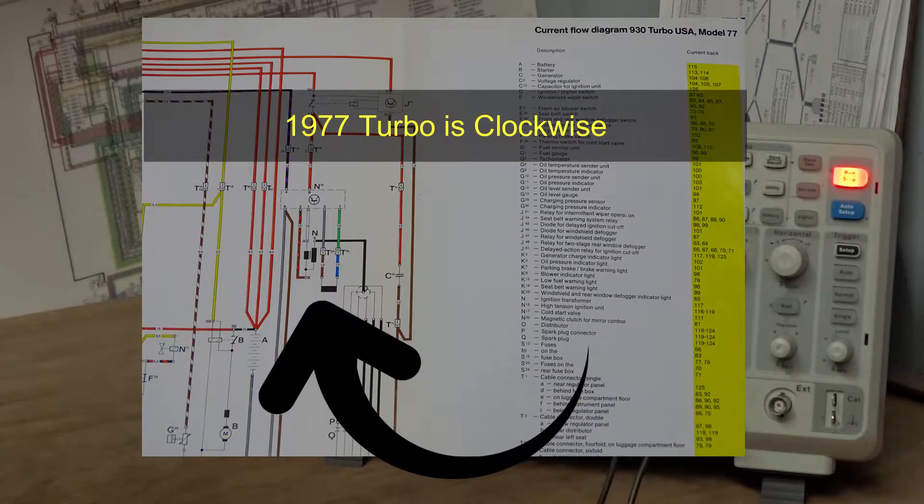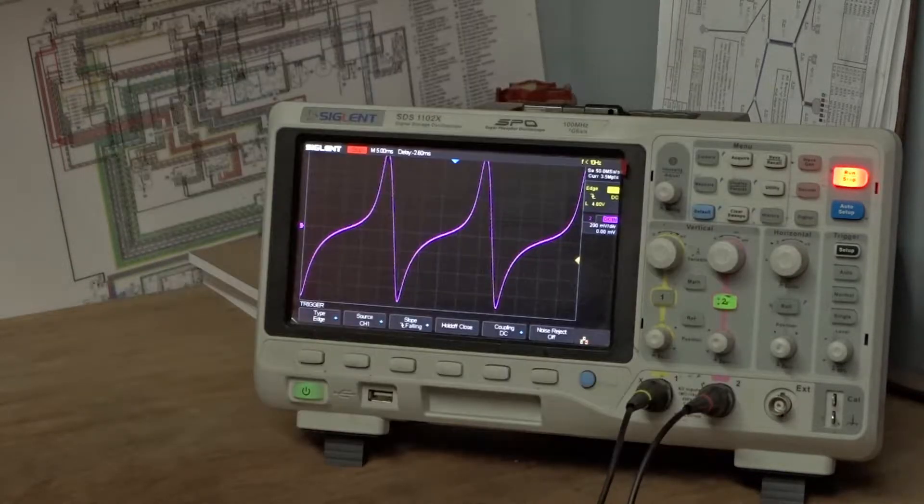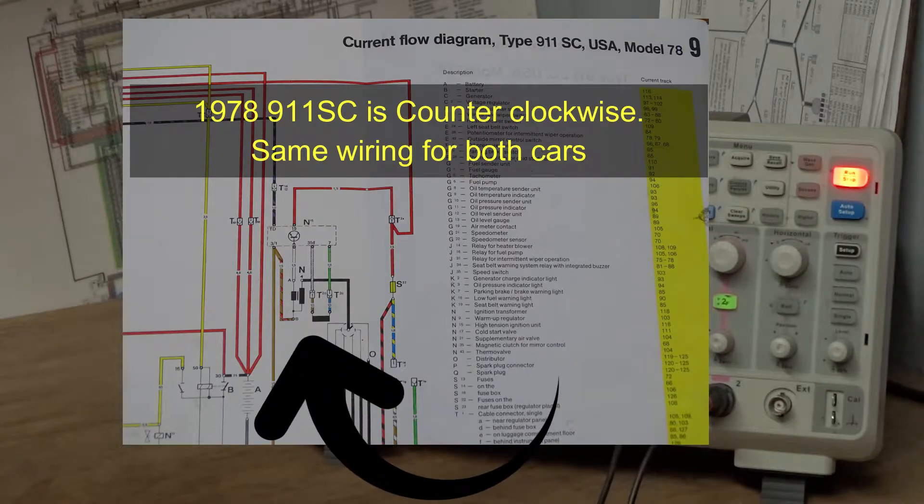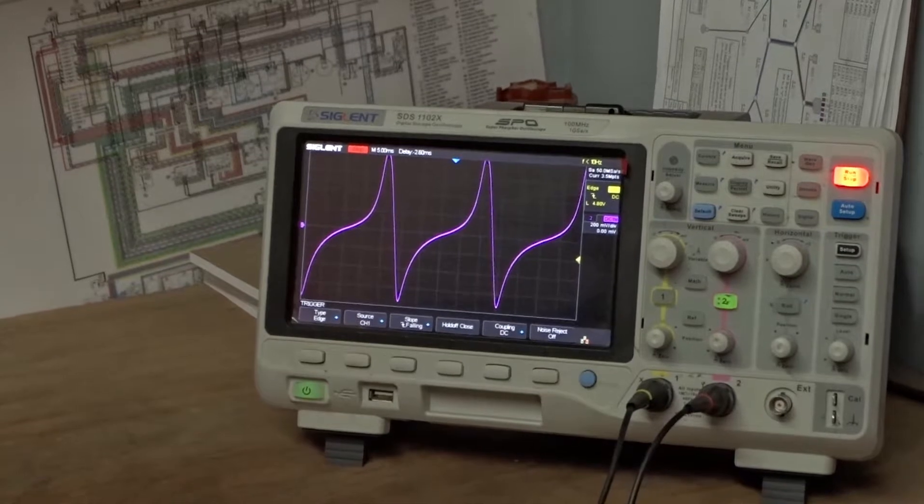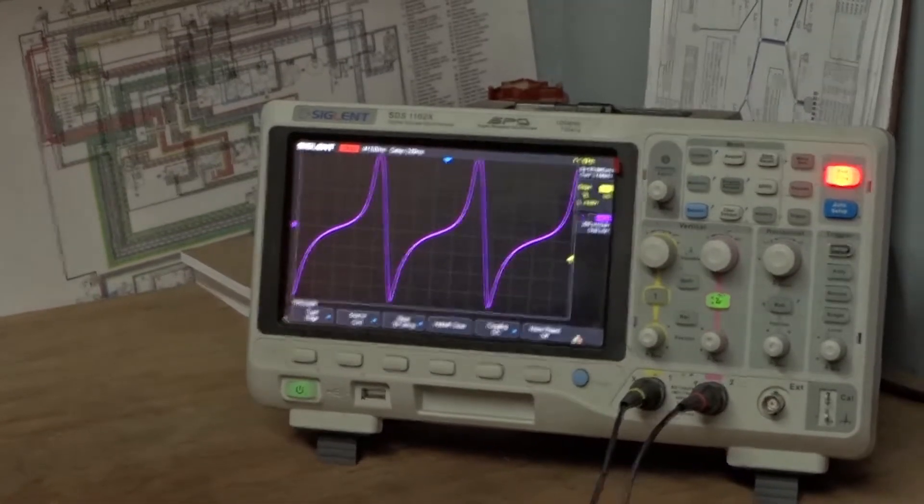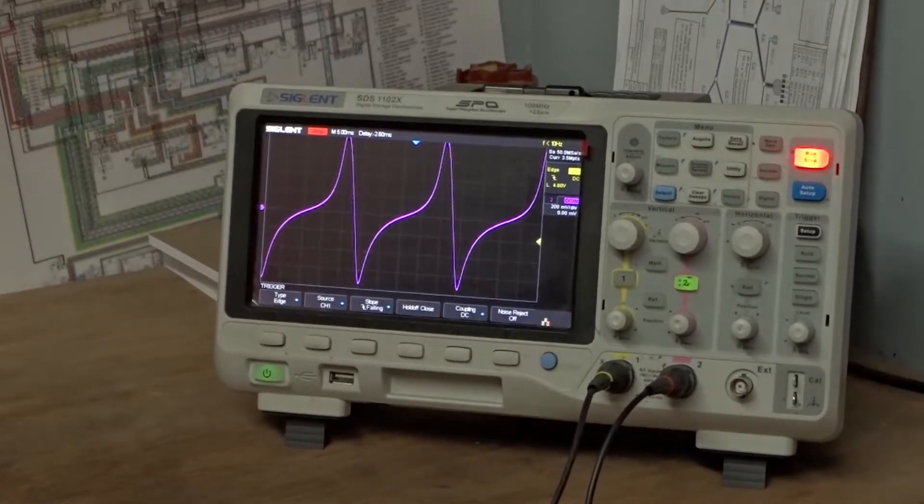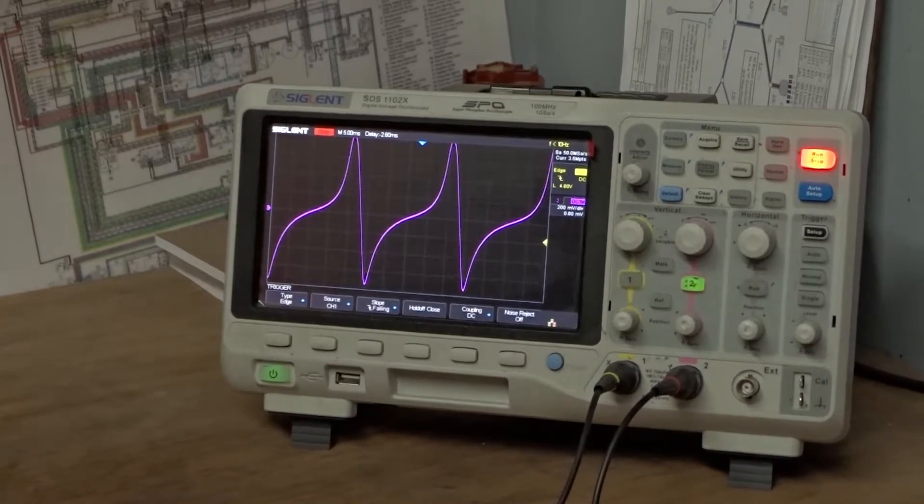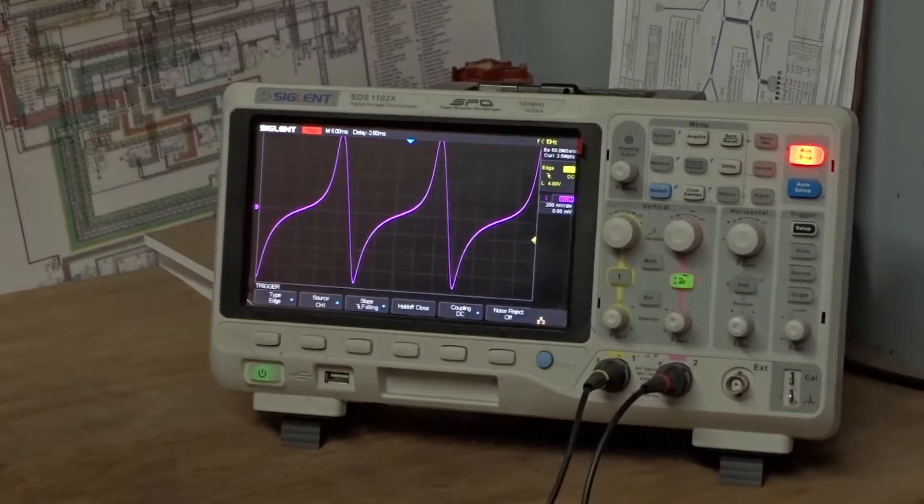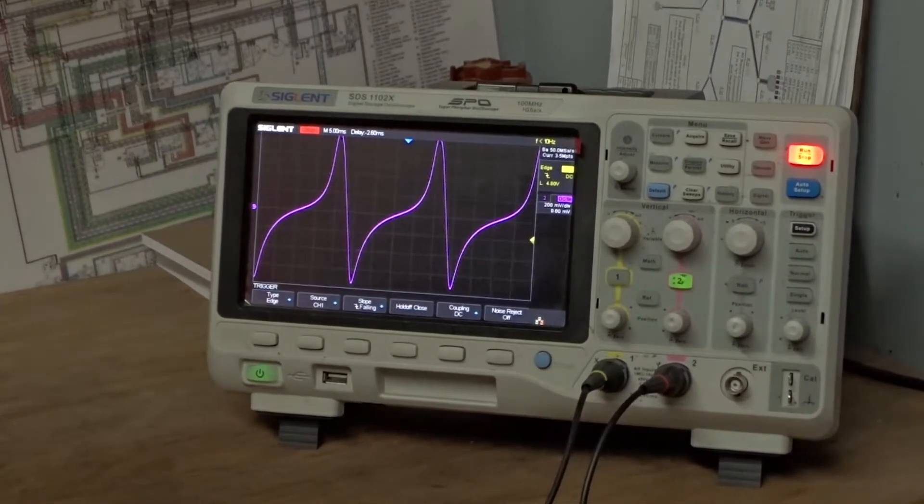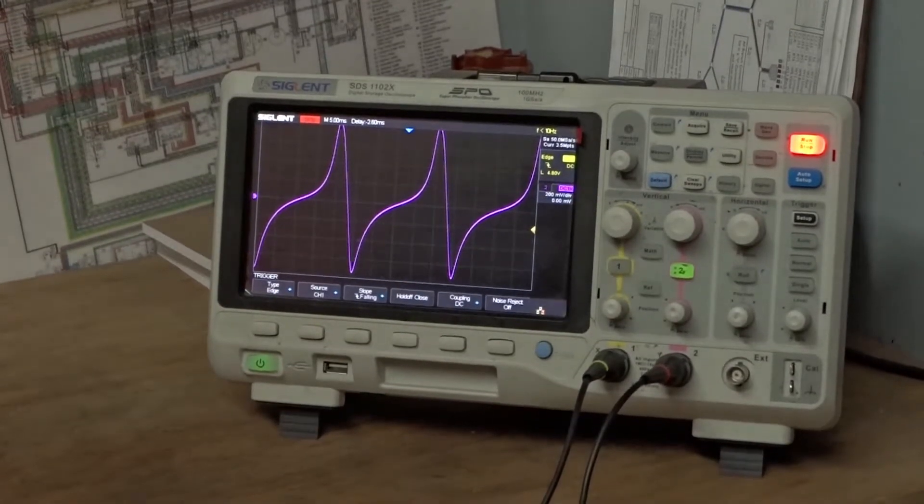This is because the way that Bosch has designed the pickup coil so that no matter which direction the distributor rotates it will always cause the same polarity in the waveform. The only way to change the polarity would be to connect the wires in reverse.